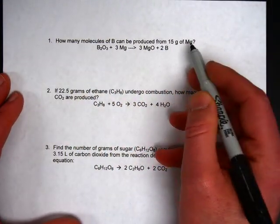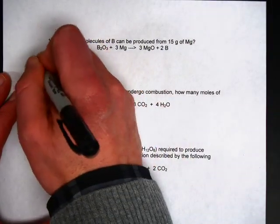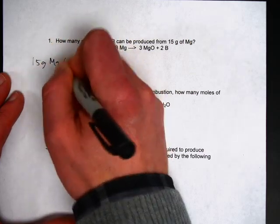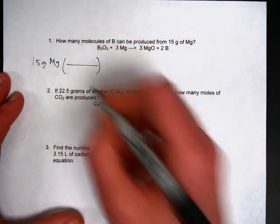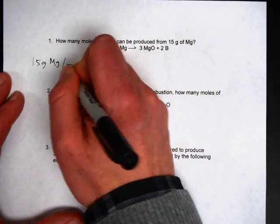So how many molecules of boron can be produced from 15 grams of magnesium? Start with what you're given which is 15 grams of magnesium. Convert that to moles first by dividing by molar mass. That is 24.3 grams for magnesium.